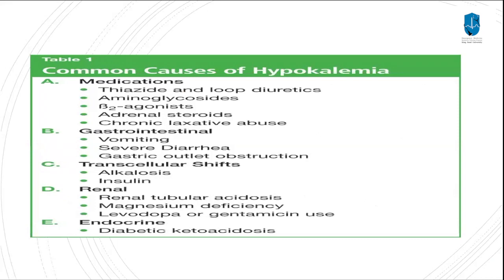There are many causes of hypokalemia. Medications include thiazide and loop diuretics, beta-agonists, and some antibiotics. We also have GI losses, either by vomiting, severe diarrhea, or obstruction. There is intracellular shift due to alkalosis or insulin. Renal causes include renal tubular acidosis, magnesium deficiency, and levodopa or gentamicin use. For endocrine causes, we have DKA.